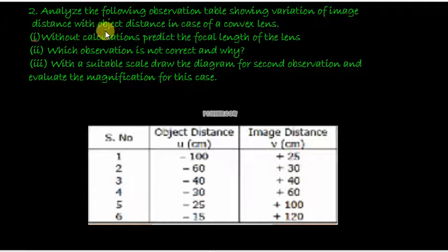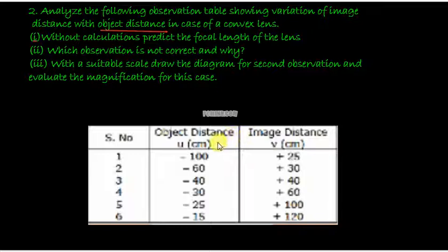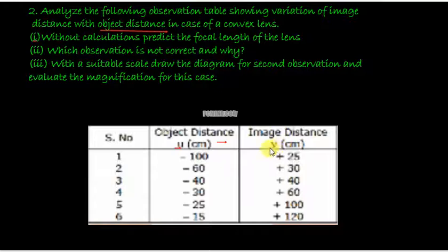The next question says: analyse the following observation table showing variation of image distance with object distance. We are given a table where one column gives the object distance u and the other gives the image distance v.